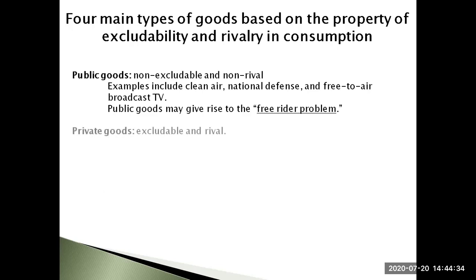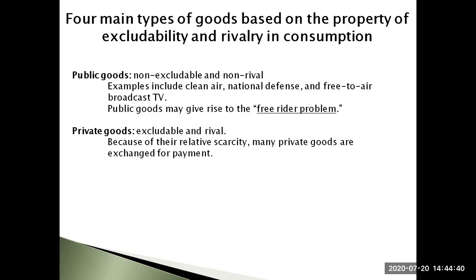Private goods are rival and excludable. These include things like a personal book — it is excludable because the owner can prevent anyone else from reading it, and it is rival because one person reading it prevents another from reading it at the same time. There are usually limited quantities of these goods, and owners or sellers can prevent other individuals from enjoying their benefits. Because of their scarcity, almost all private goods are exchanged for payment.